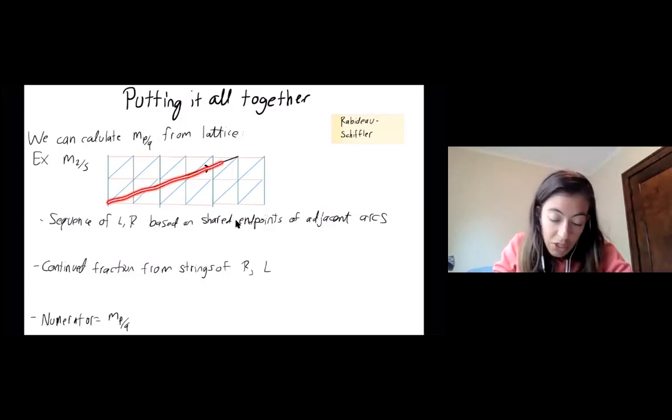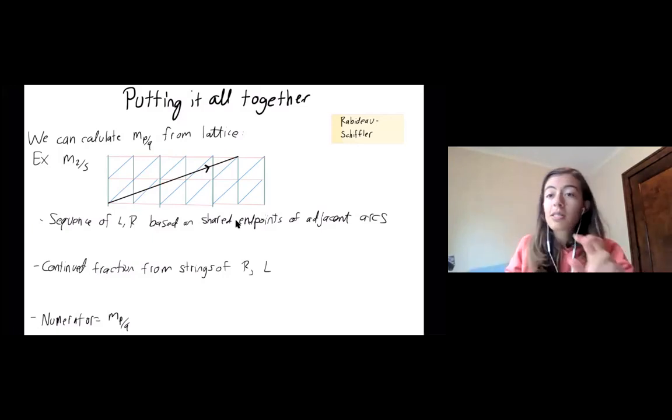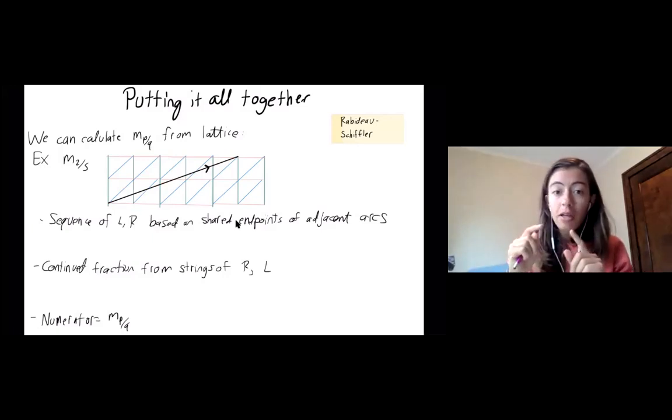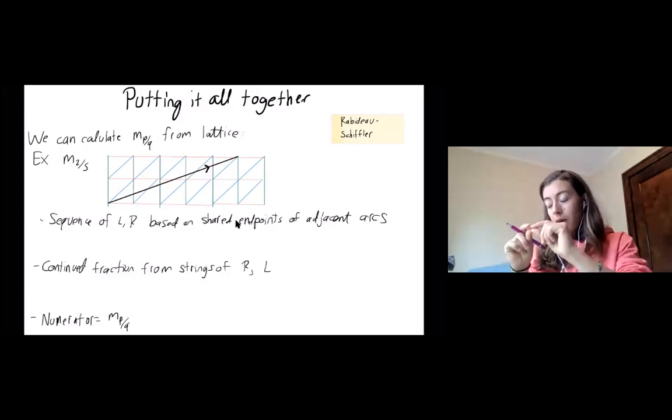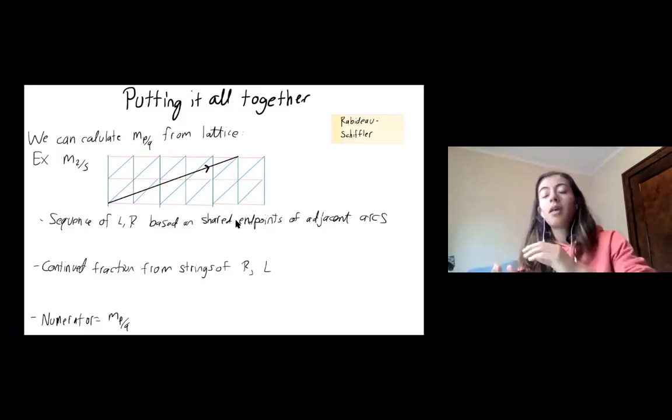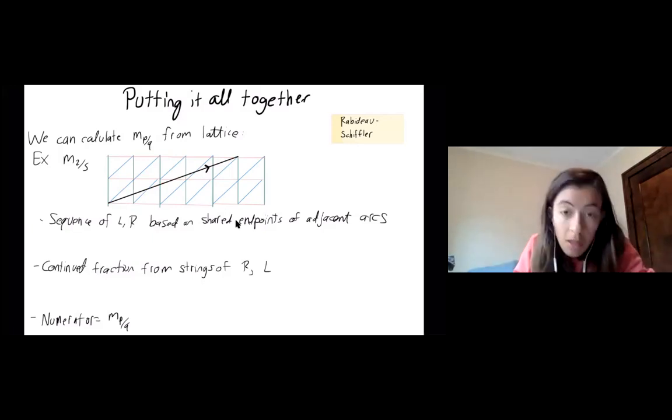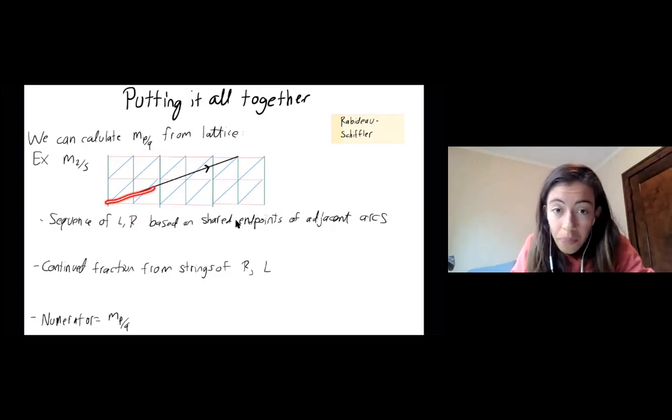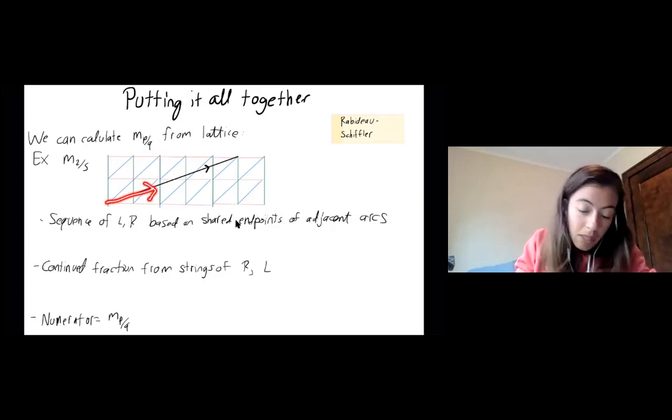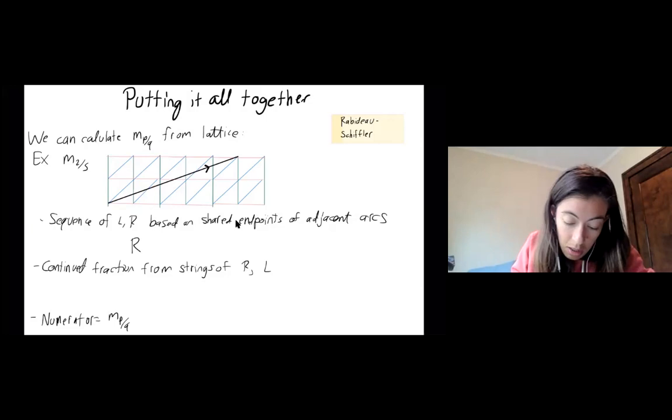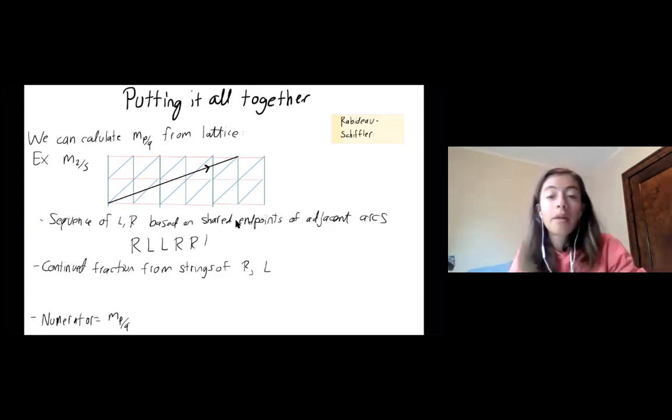And what those are going to keep track of is as I travel along this arc, and I just pick an orientation, I look at the arcs of triangulation across, and for every adjacent pair, I'll put down an R if the shared vertex of those two arcs is to the right of my like black arc, and then an L if it's on the left. So for example, the first one, so I crossed that green, then the blue, and those share vertex to the right as I'm traveling this way. So my first entry will be an R. And then I'll get an L, an L, an R, an R, an L. Okay.